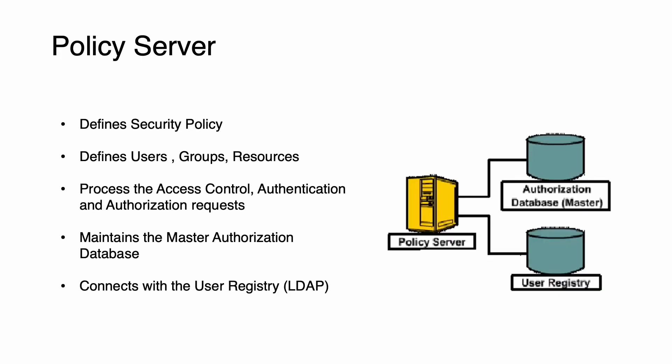The second component is the policy server, which is key to processing access control, authentication, and authorization requests. It maintains the master authorization database for the management domain. It provides authorization and authentication services and should be placed in a secure, controlled area. It defines the security policy, users, groups, and resources. It also connects with the LDAP server and assists in user authentication flows.